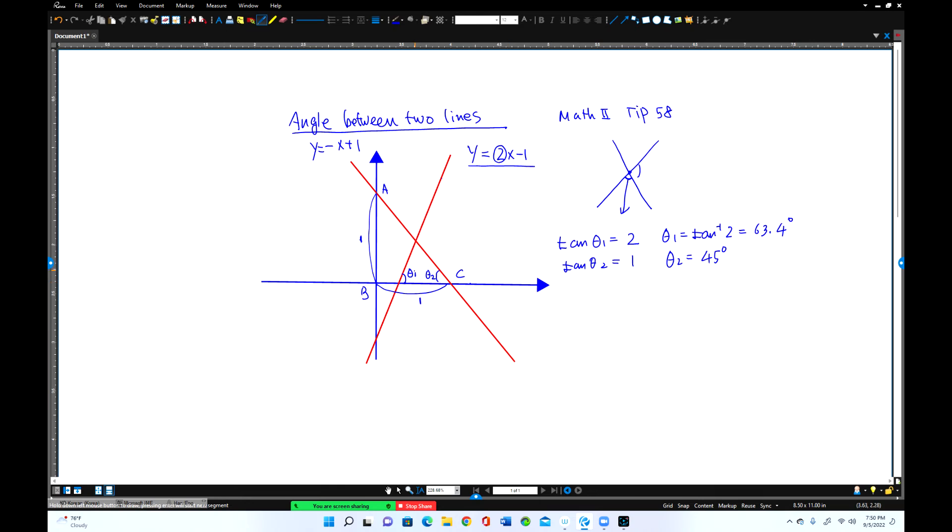So angle theta 1 is 63.4. This angle equals 45 degrees. Sum of these two angles is how much? 63.4 plus 45 equals 108.4 degrees.